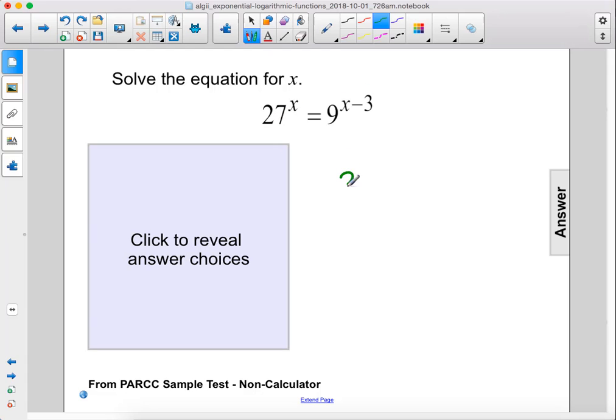27 can be rewritten as 3 to the third power, raised to the x power, and 9 can be rewritten as 3 to the second power, raised to the x minus 3 power.